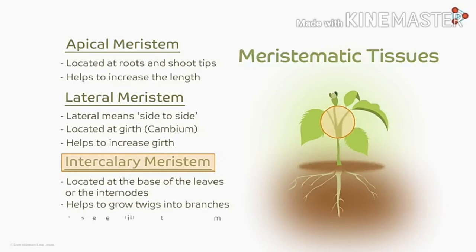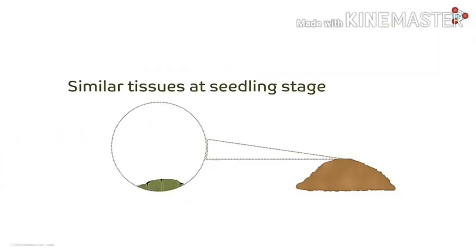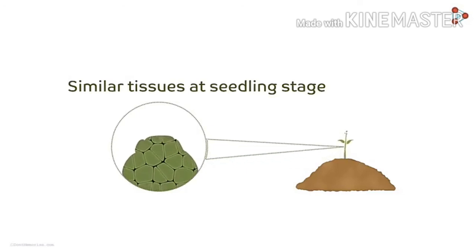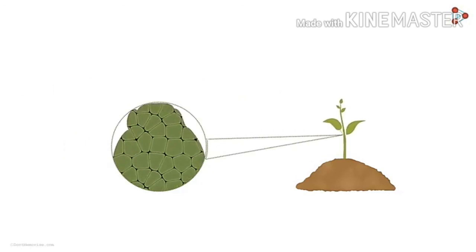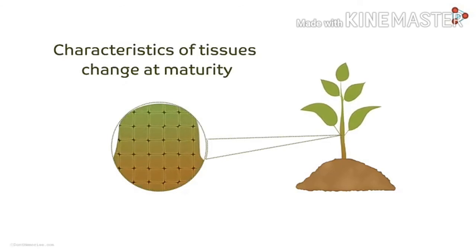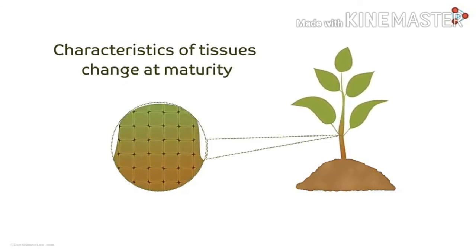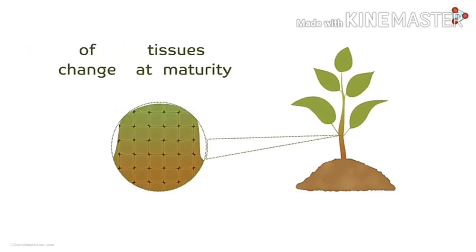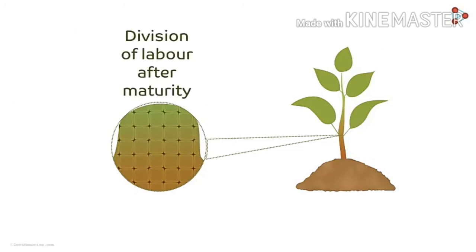Now the third characteristic is that tissue cells are filled with cytoplasm, which means they require more energy to perform the functions of a plant. Now, an interesting thing is that tissues have no distinct types at the seedling stage — meaning when a plant is in seed form, all its tissues are alike. After growing and reaching maturity, the further types of tissues become apparent, and only then does division of labor occur — meaning functions get divided.